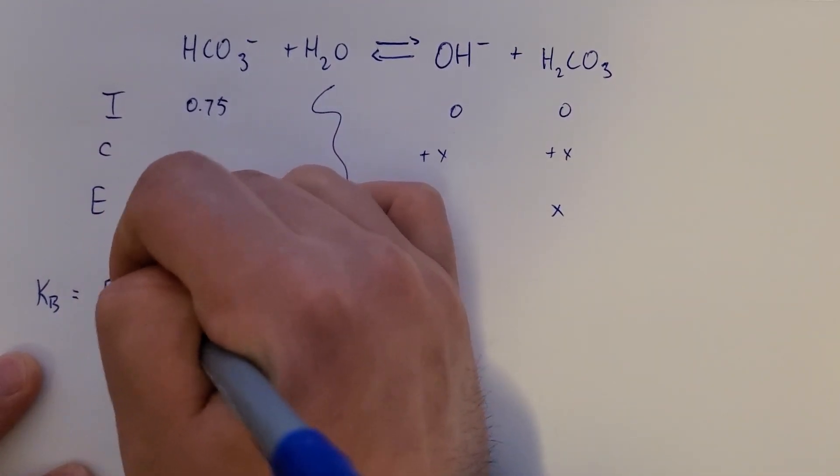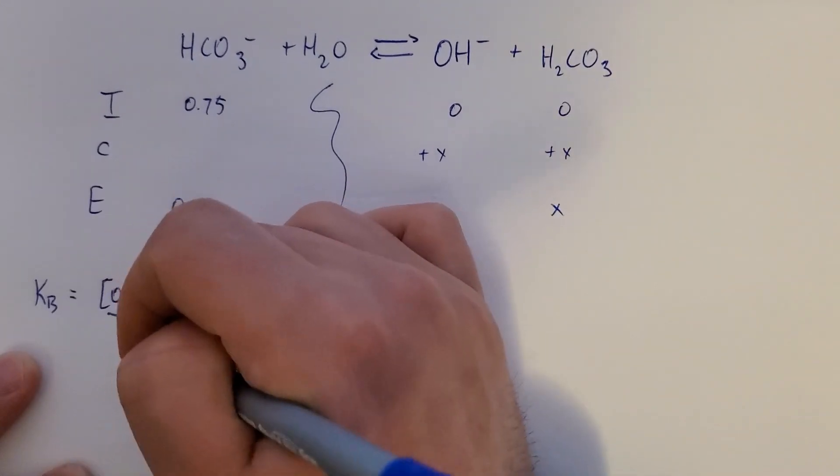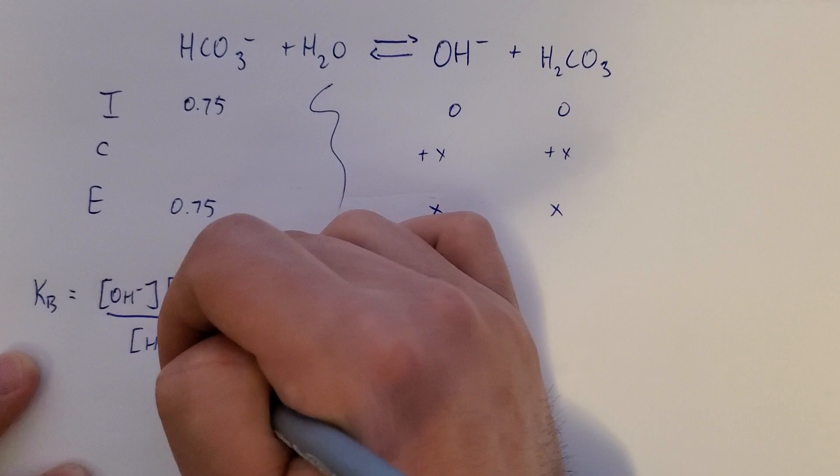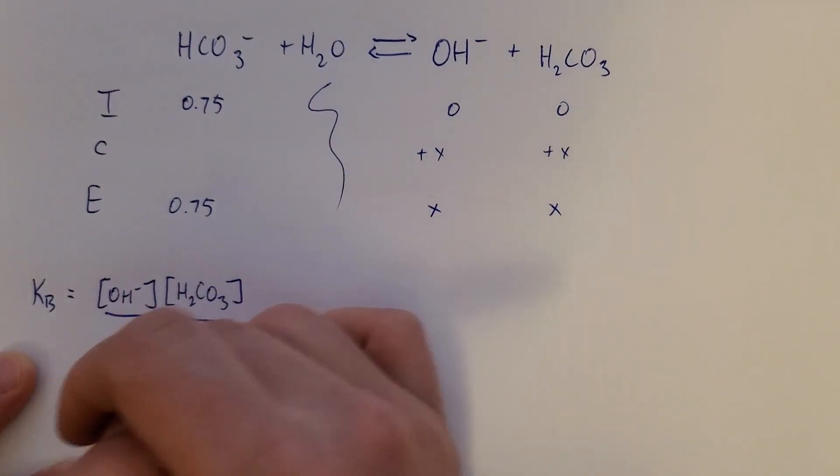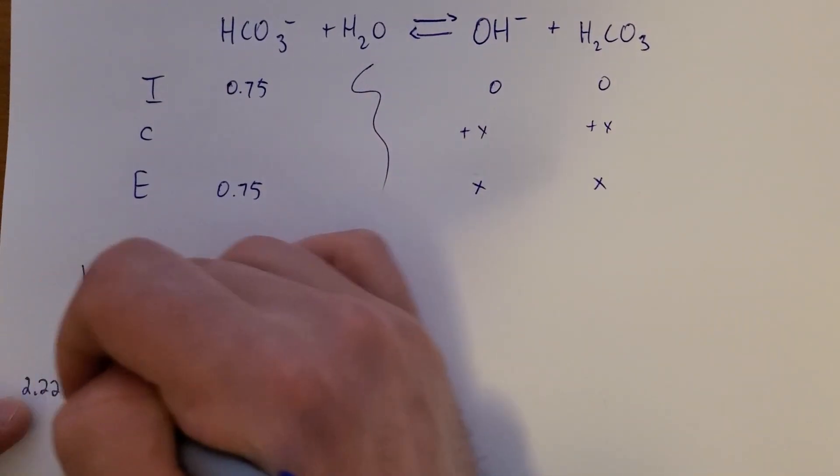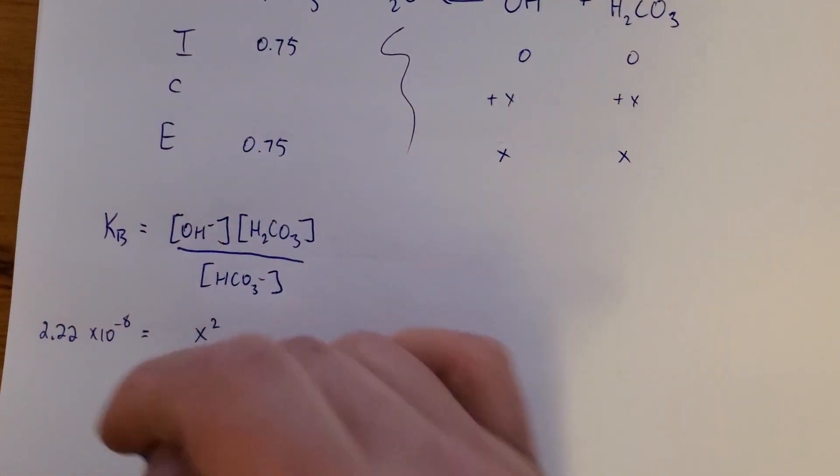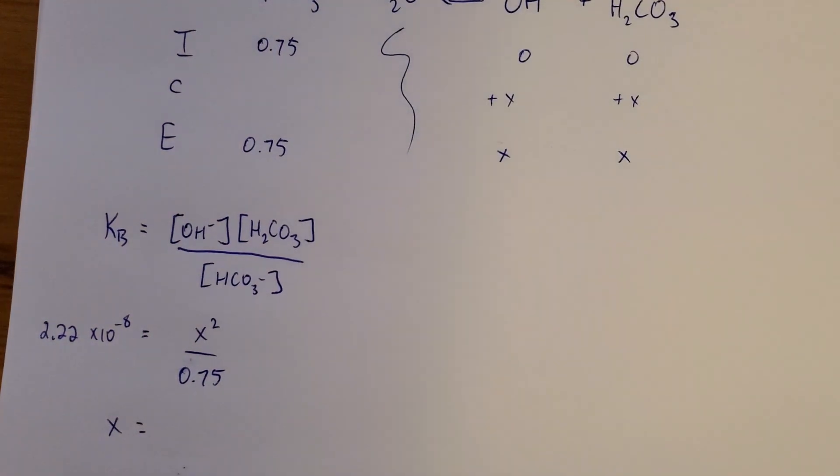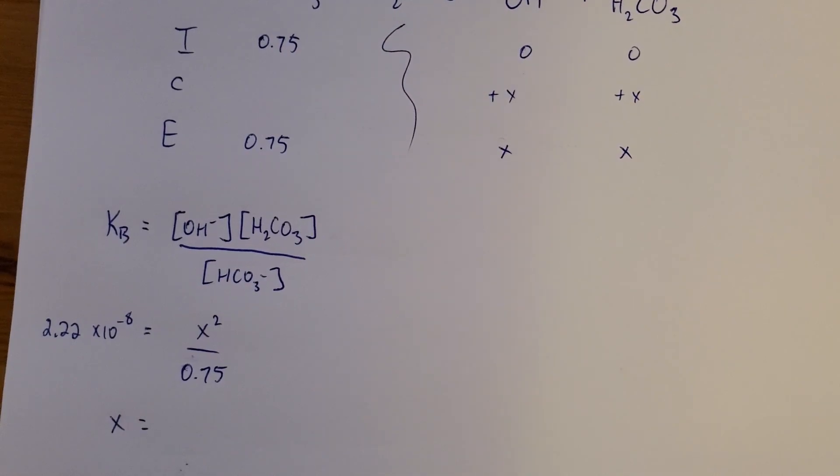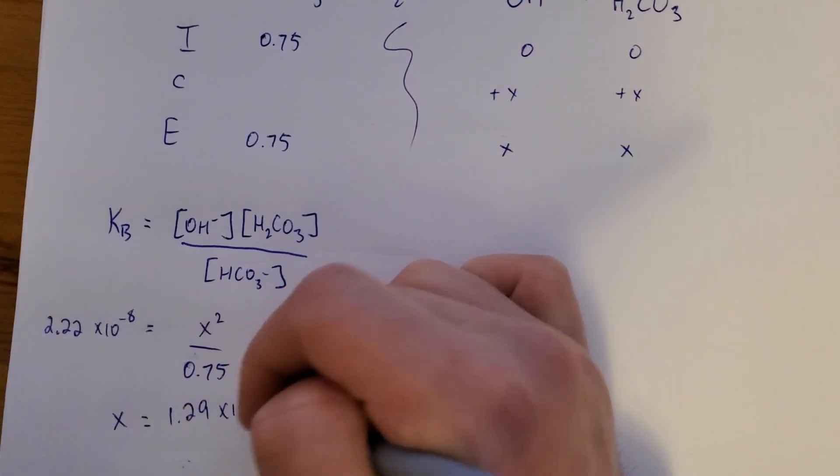All right. KB. These two guys divided by the weak base. Which is going to be X squared over 0.75. And we have KB. It was 2.22 times 10 to the negative 8. Okay, so finishing up here, I get 1.29 times 10 to the negative 4.